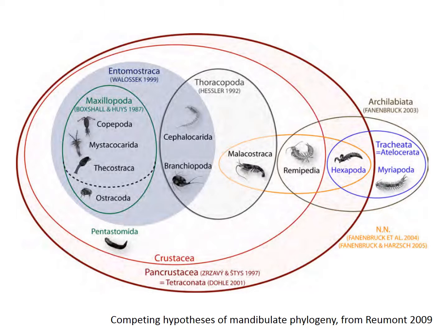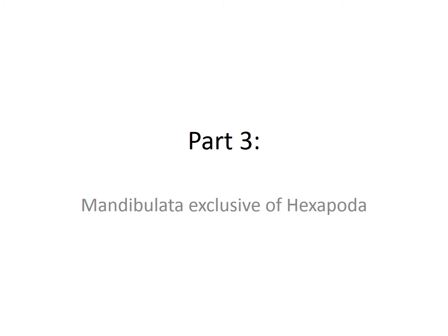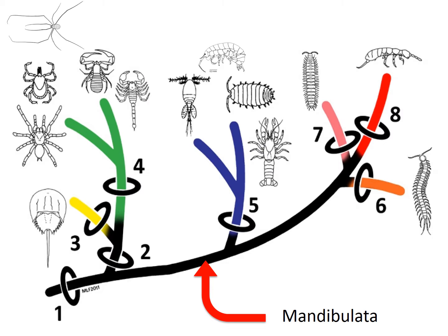Some of these hypotheses are very well supported. We kind of don't have a problem with saying things like insects represent a monophyletic group, which means that insects have a single common ancestor. But for some of these other groups, that's not so easy to say, just because we don't have as strong or as good evidence to support them. So with that said, we're going to carry on with Mandibulata, exclusive of the Hexapoda, which are insects and their kin — we'll get to them in a later talk.